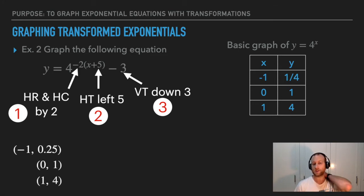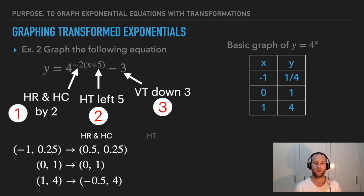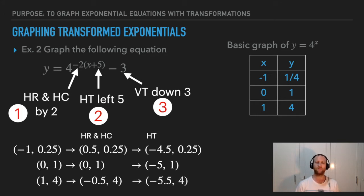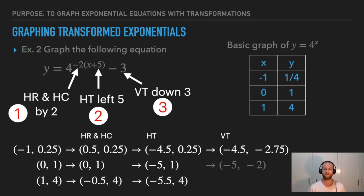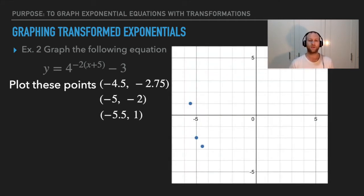Here are the original points — I changed one-quarter to 0.25 to avoid fractions. First, do the horizontal reflection and compression: take the x values and divide by negative two — the y values don't change. Then the horizontal translation: subtract five from each x value — y's stay the same. Then the vertical translation: subtract three from each y value. Those give us the new points to plot on the graph, which looks like this.